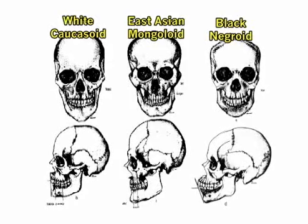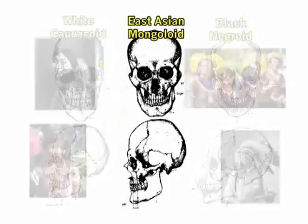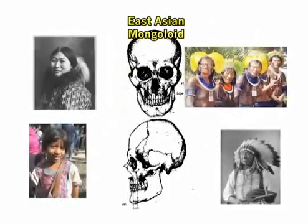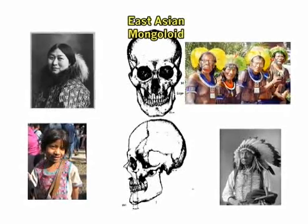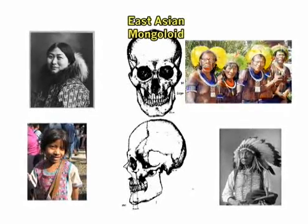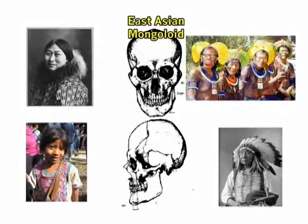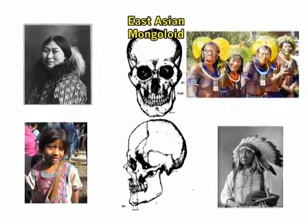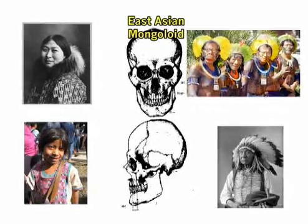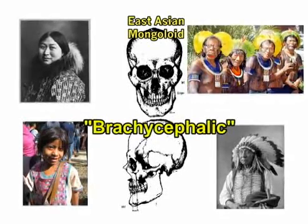Finally, East Asian or Mongoloid skulls tend to be short and broad, with wide cheekbones. North American, South American, Central American Indians, and Mexican mestizos are examples of people who generally fall into this Asian skull category. The anthropological term for these short-broad skull types is brachycephalic.